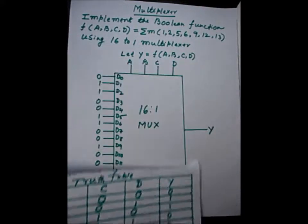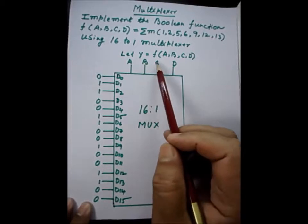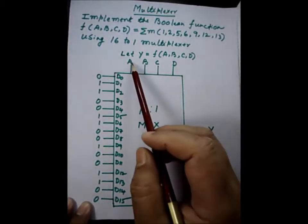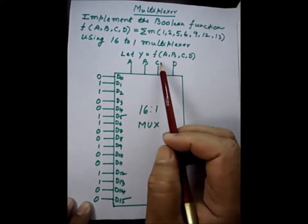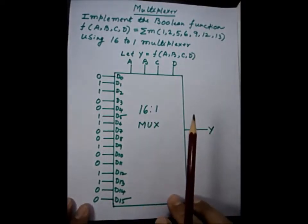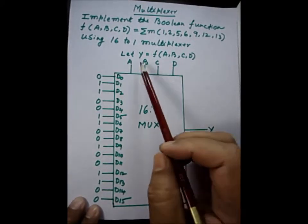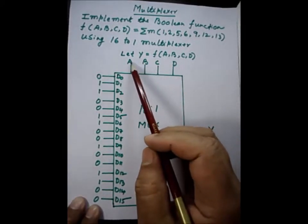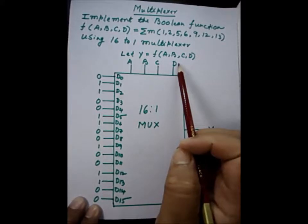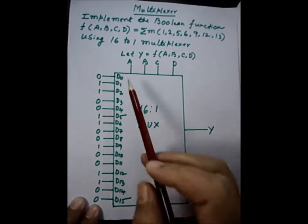Now we come to the 16-to-1 multiplexer. We know that in a 16-to-1 multiplexer, if A=0, B=0, C=0, D=0, the output is D0. If A=0, B=0, C=0, D=1, the output is D1. One interesting thing to note: if we convert the input combination to a decimal — A=0, B=0, C=0, D=1 gives decimal 1 — the output becomes D1.